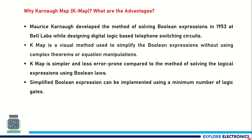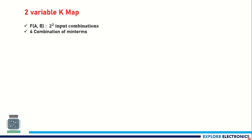Let us get into the two variable KMAP. In a two variable KMAP, the function of two variables A and B will have 2 power 2 input combinations, that is 4 combinations of min terms.